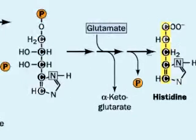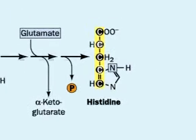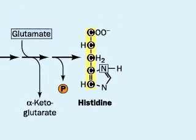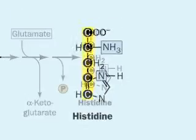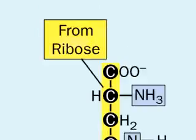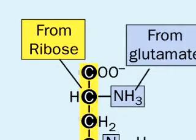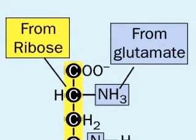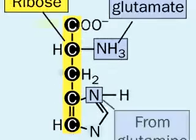In the last four steps, glutamate contributes an amino group making histidine. Note the origins of different parts of the molecule.